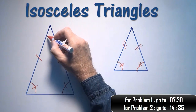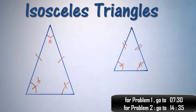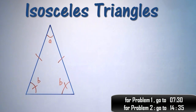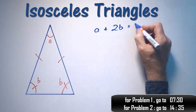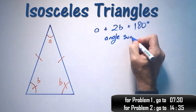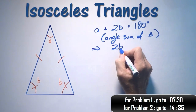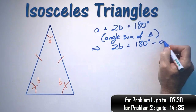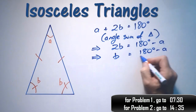Say I were to label these angles A, B, and C. I may as well have labeled this A, B, and B, because as we said, these base angles are equal. That means that A plus two B equals 180 degrees, because of the angle sum of a triangle. That implies two B equals 180 degrees minus A, and that implies B equals (180 degrees minus A) over two.